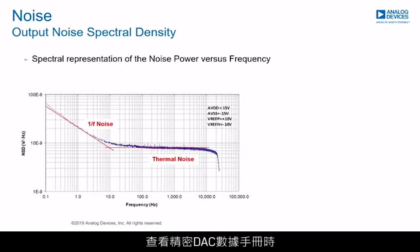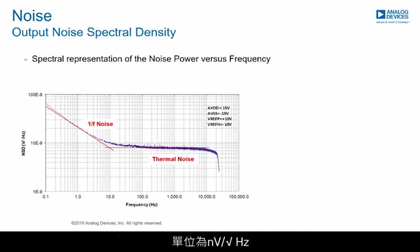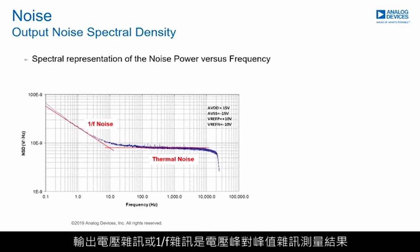When looking at a precision DAC datasheet, noise is specified in one or two ways: output noise spectral density, which is typically measured at 1 kHz and 10 kHz and specified in units of nanovolt per root hertz, and output voltage noise, or 1/f noise, which is a voltage peak-to-peak noise measurement.